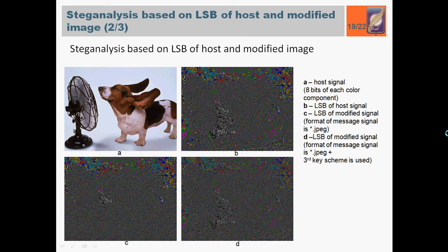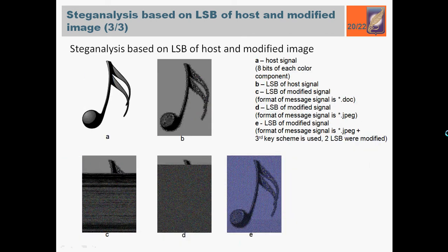For containers with small number of colors and sharp borders, like presented on this slide, visual attack detects embedded message easily. To improve stego resistance for this case, the combination of two methods was applied: using absurd key scheme, and two least significant bits were modified instead of one.